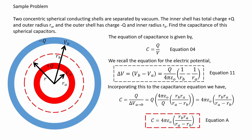Sample problem: Two concentric spherical conducting shells are separated by vacuum. The inner shell has total charge positive Q and outer radius RA, and the outer shell has charge negative Q and inner radius RB. We find the capacitance of these spherical capacitors using the capacitance equation 4, and recalling the electric potential between two points given by equation 11. Incorporating this into the capacitance equation, we get an expression for capacitance shown as equation A.